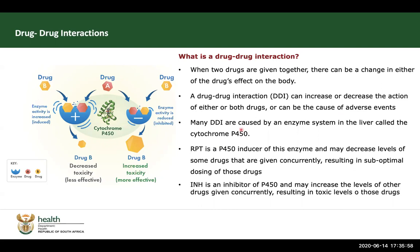Most drug-drug interactions are caused by an enzyme system in the liver, which is the cytochrome P450. Rifapentine, which we now use as part of 3HP, is a P450 liver enzyme inducer and may decrease levels of some drugs, for example your protease inhibitors, nevirapine, and so on. INH is a liver enzyme inhibitor and may increase the blood levels of other drugs if given concurrently.